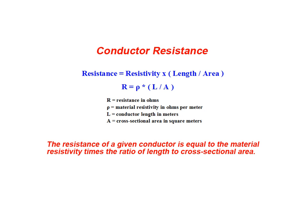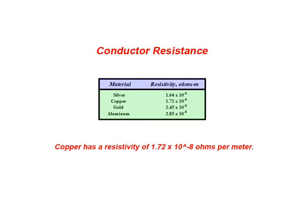In order to use this general relationship to solve our example problem, we require the specific resistance, or resistivity, of copper. As shown in this table of popular conductor materials, copper has a resistivity of 1.72 times 10 to the power of negative 8 ohms per meter.